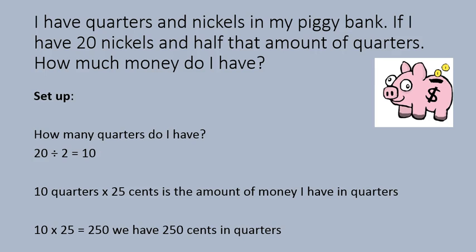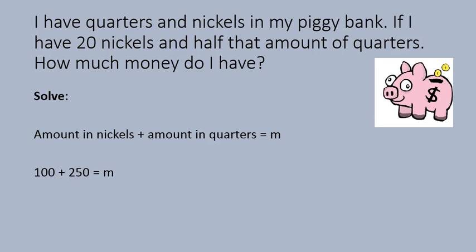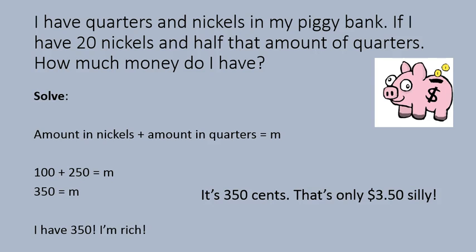That is not the end of the question. Remember, I'm trying to solve how much money I have total. So I take the amount in nickels — 100 cents — and add it to the amount in quarters — 250 cents — and I get 350 cents. That's $3.50. So it's not quite as rich as I might have thought!